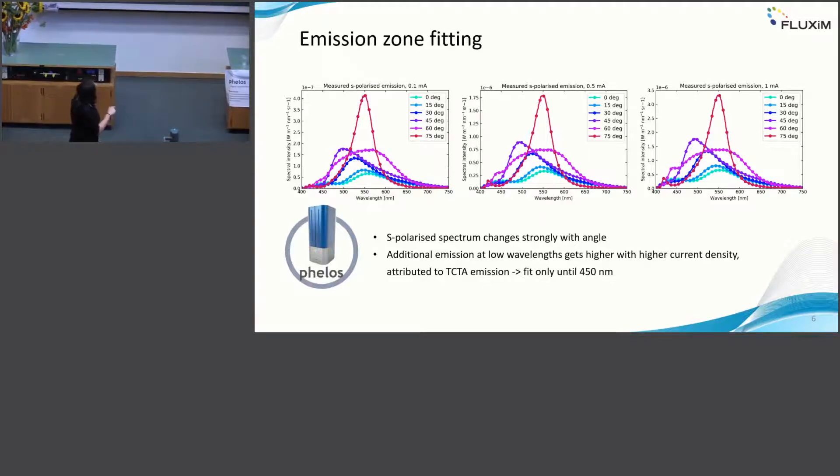Just to show you the experimental data. We measured angular emission. Here I just show you six angles. I measured always at three different current values, 0.1, 0.5 and 1 milliamp. This corresponds to 1.5 milliamps per square centimeter. What you can see already from the experiment is that you have here no contribution from anything else and here it grows with increasing current density. We believe it's due to some emission from actually the HDL layer. I did not really manage to model this properly because it's more complicated. It's work in progress, maybe I achieve it. But for the moment, I just fit until a wavelength range of 450 for simplicity.